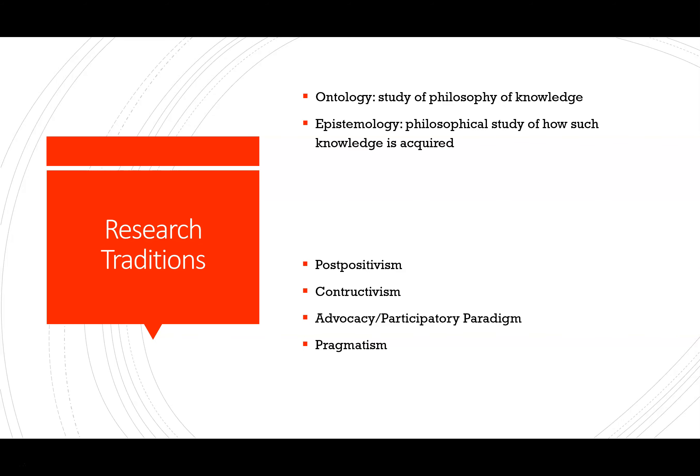The research traditions section covers the historical philosophical foundations of research. Ontology is the study of the philosophy of knowledge; epistemology is the study of how that knowledge is acquired. Post-positivism stresses identifying and assessing what causes or influences an outcome. Research in this tradition involves making claims and then refining or dropping them in favor of others. Knowledge here is shaped by data, is rational, and research aims to develop true statements.